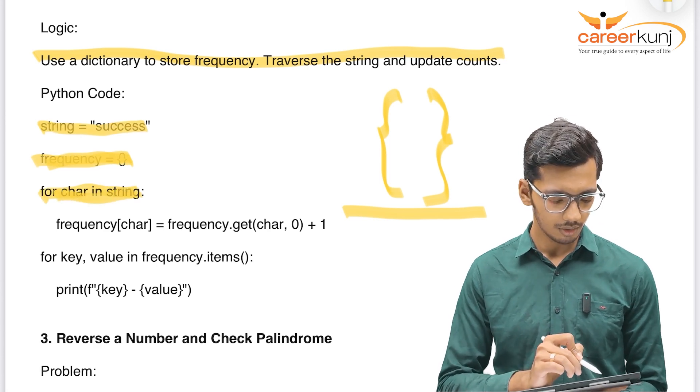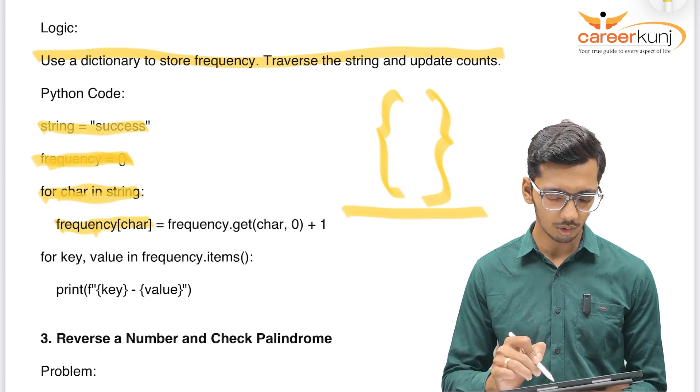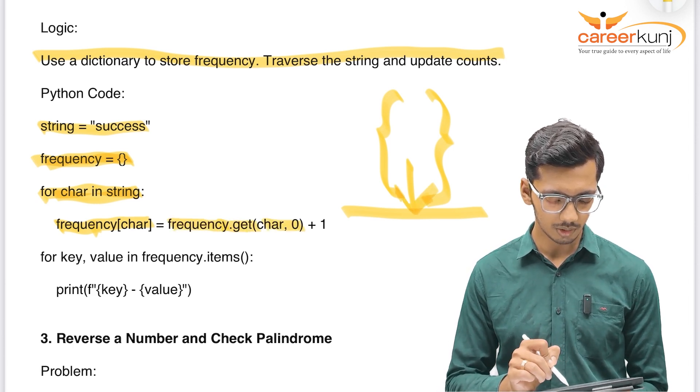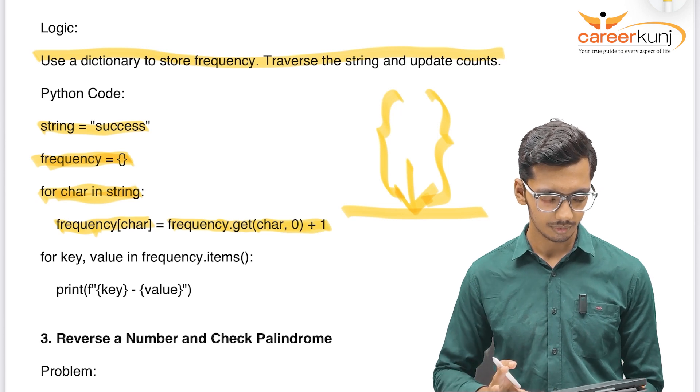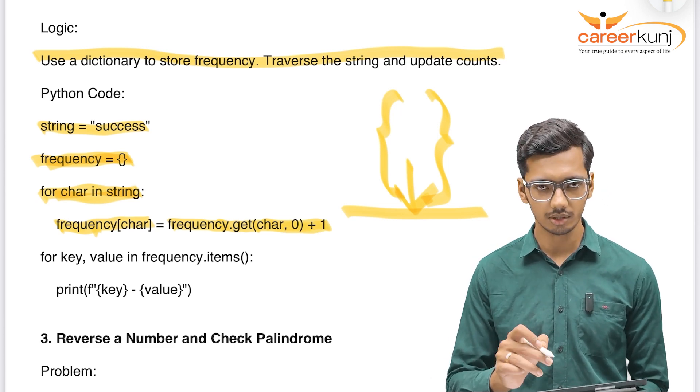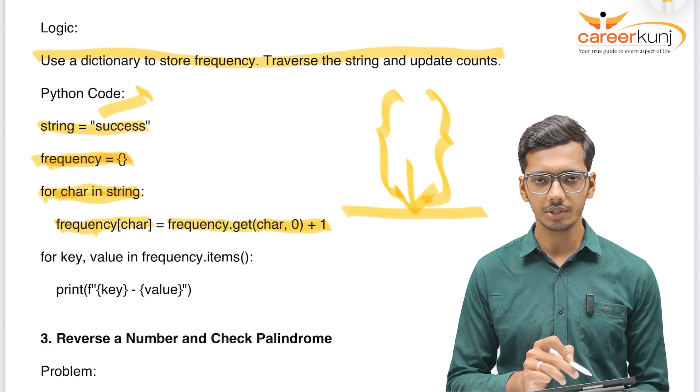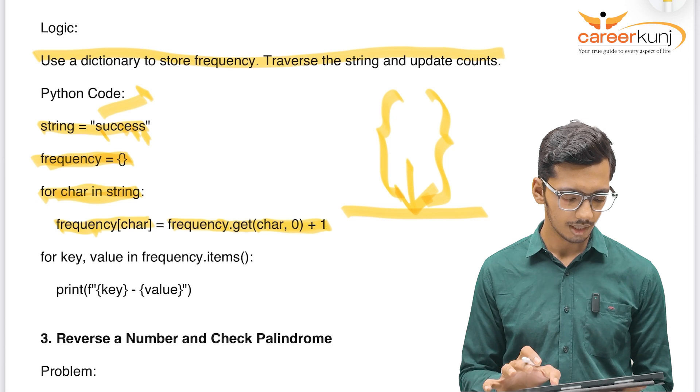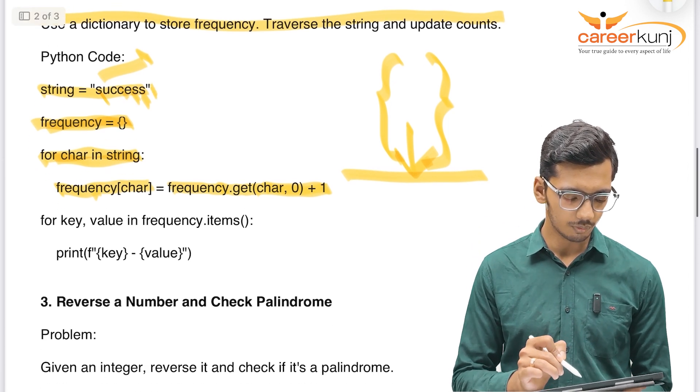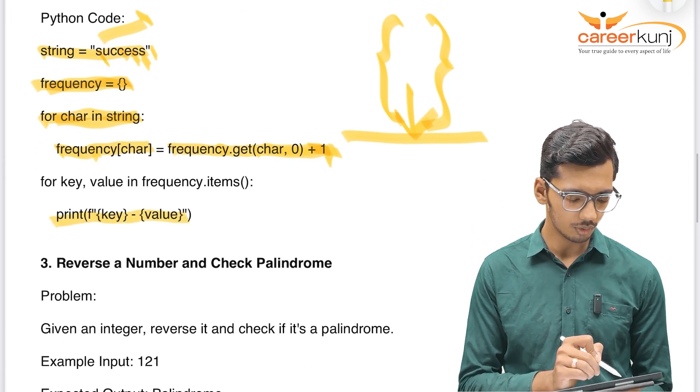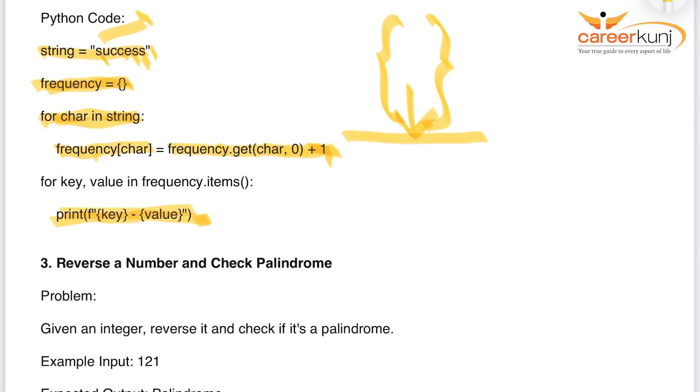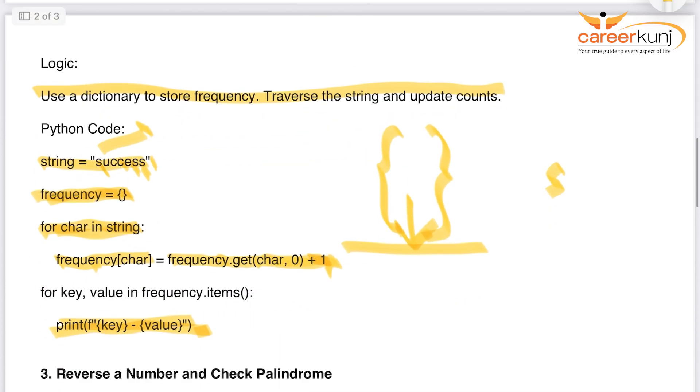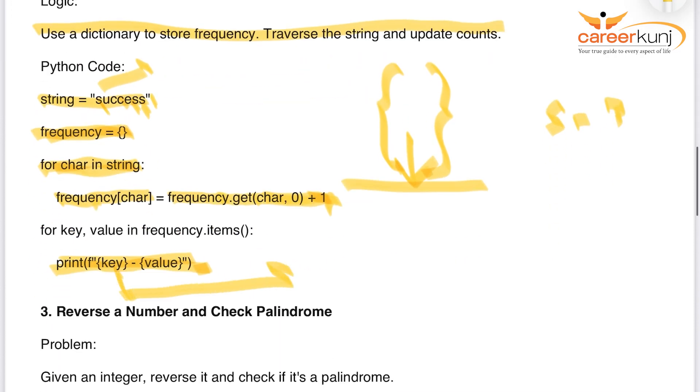This is my first loop for character in string. That means one by one, it will check for that. Frequency of char, that means this is the element of the dictionary. Is frequency of get char 0 plus 1. That means my first character. And it will take the frequency across the string. For example, it will take S first. And it will check how many times the S has occurred in the word. It is 1, 2, and 3. Once it reaches 3, it will come out of loop and it will print this value.